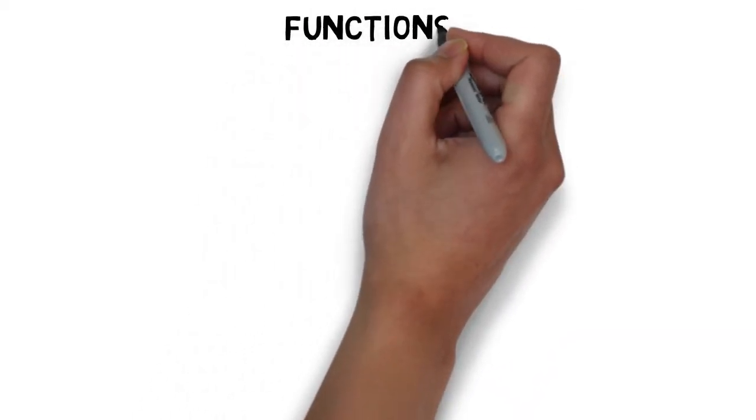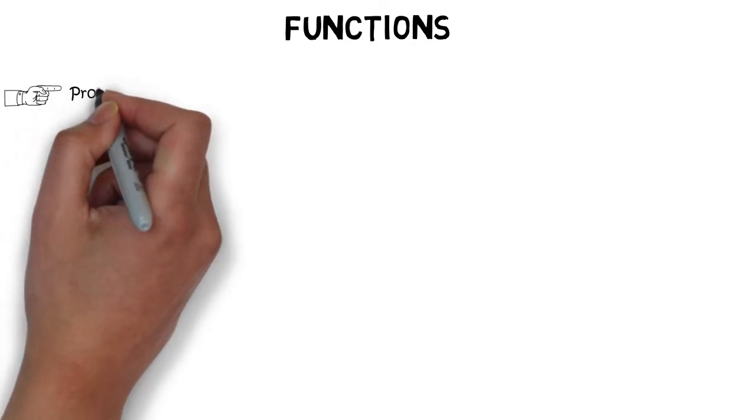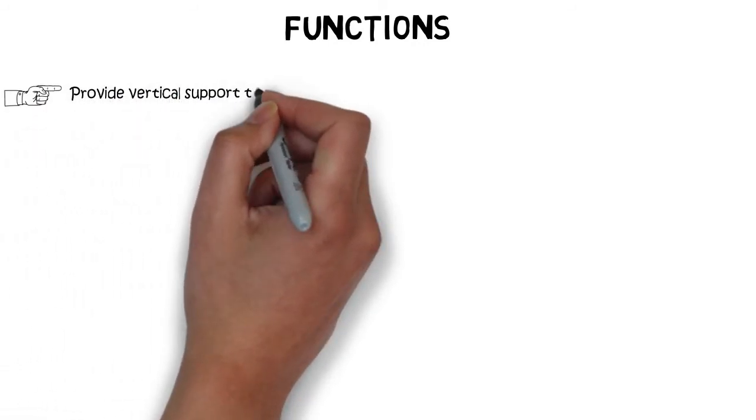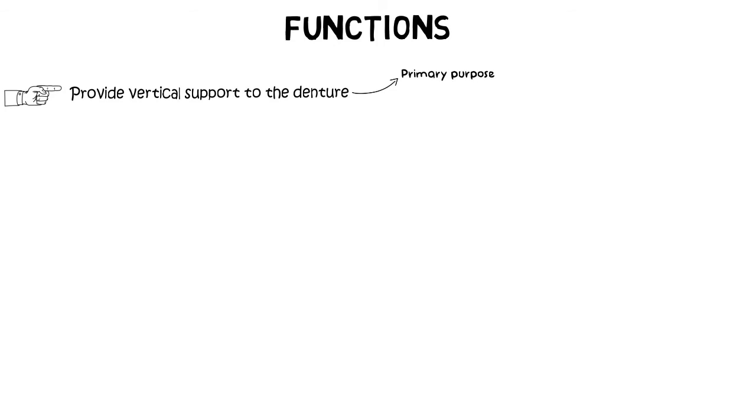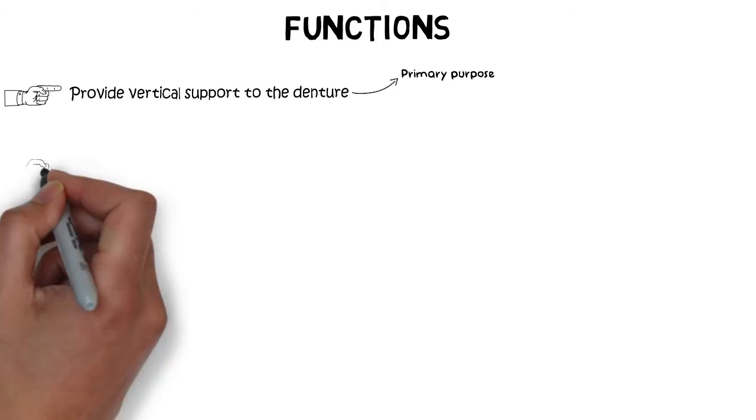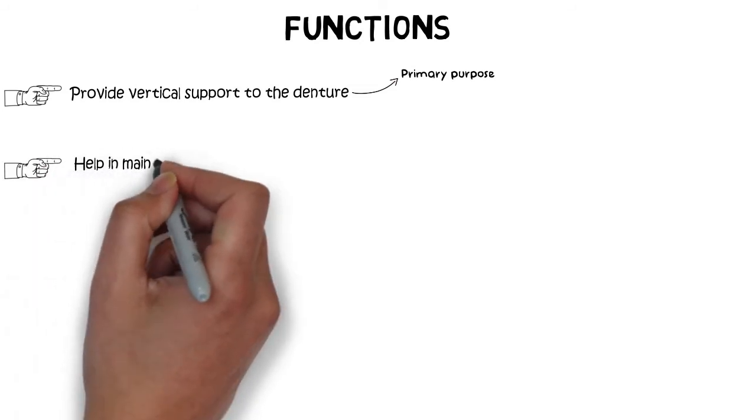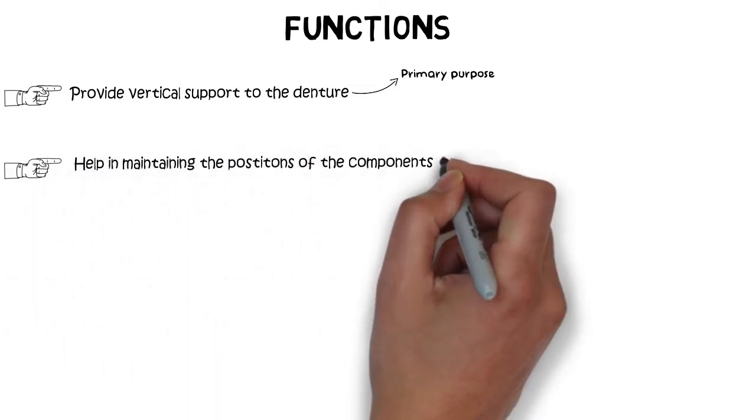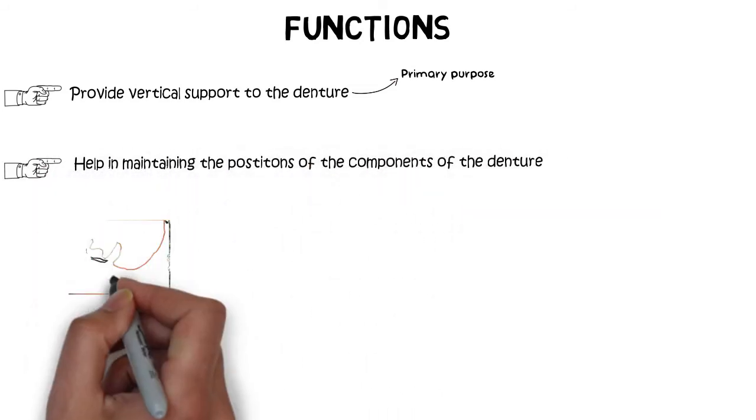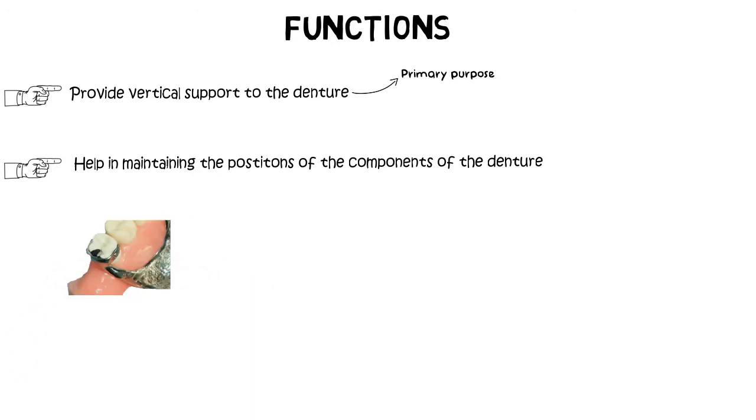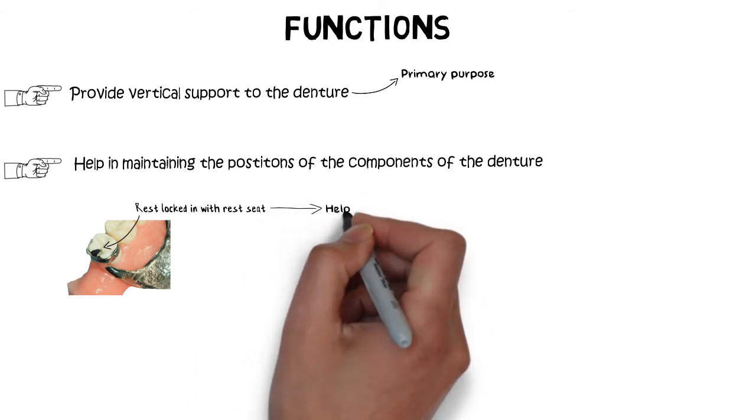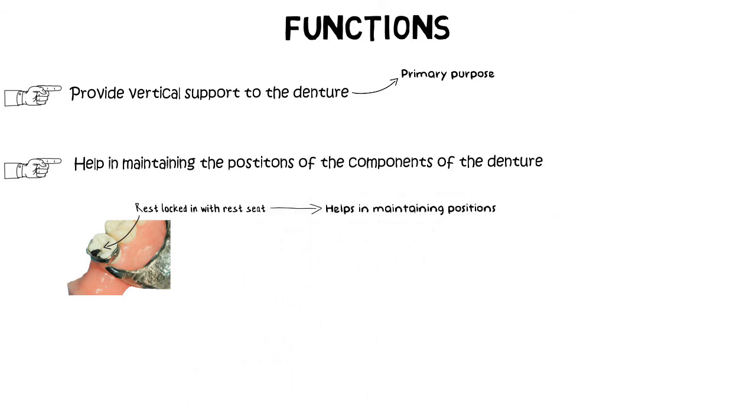So as we have discussed, the primary purpose of a rest is to provide vertical support to the denture. But apart from this, rest also accomplishes some other functions. They help in maintaining the positions of the components of the denture. Because as I have already mentioned, the rest is essentially locked in its position with the help of the rest seat. So this locking mechanism helps in maintaining the position of the other components of the denture.